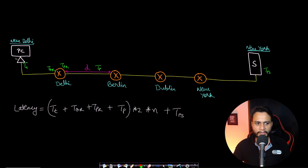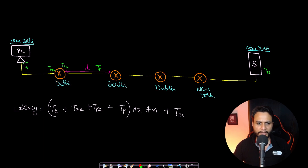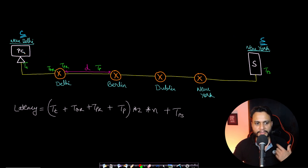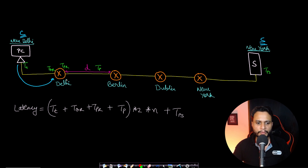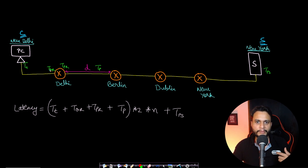Let's understand another scenario. Assume our client is in New Delhi and wants to connect to a server in New York — for example, adding an item on an e-commerce website connected to a New York server. When the client sends the request, it doesn't go directly to the server; it flows through multiple routers. The request goes from your PC to a router, and from one router to another — these are all independent hops that the packets take. The time of transmission on the physical wire is called tt, the transmission delay.